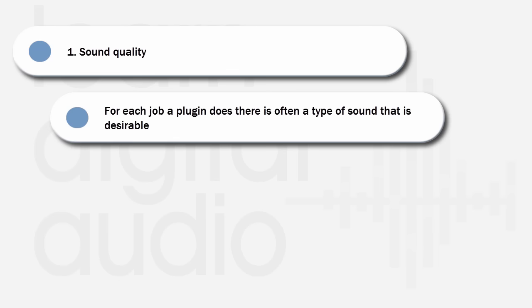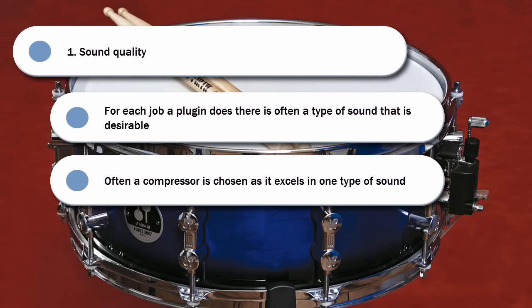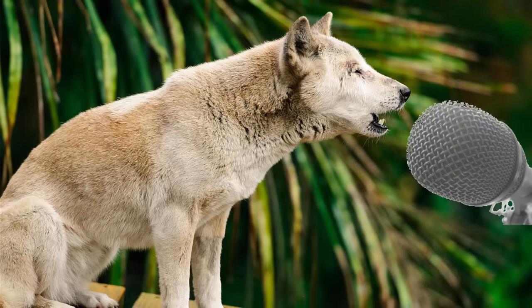Every type of plugin has many different jobs to do, and within these jobs there is often a type of sound that's desirable. For example, if you're compressing drums you often want them to be punchy. Often a compressor is chosen as it excels in one type of sound, for example a punchy sound. It might not be so great for smooth vocals. We will go into detail later about what each of these plugins excels at.